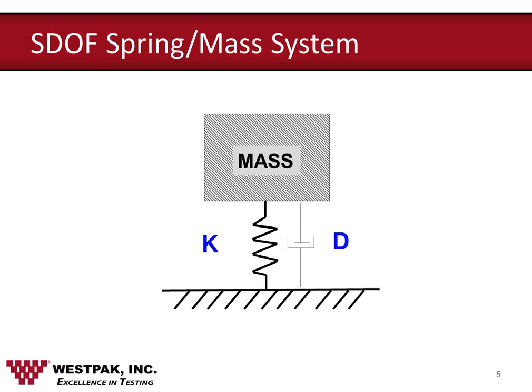We revisit our old friend, the spring mass system. This system is a single degree of freedom system in that the mass is somehow constrained to move in one axis only. The mass is uniform and has no flexibility, the spring has no mass, and the damping is so-called critical — we'll explain that a little bit later. It doesn't matter if the spring mass system is in compression, tensile, shear, flexure, or any other spring mode.